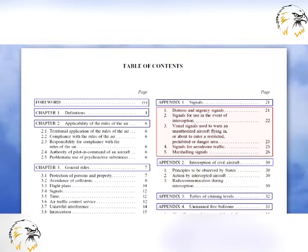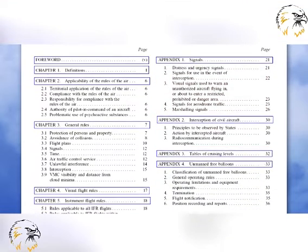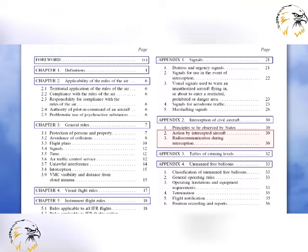This lays down standard rules for intercepting aircraft, and mandates that intercepted aircraft are to comply with a standard set out in Appendix 2, Sections 2 and 3 to Annex 2, interpreting and responding to visual interception signals.